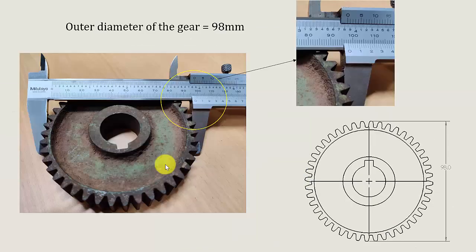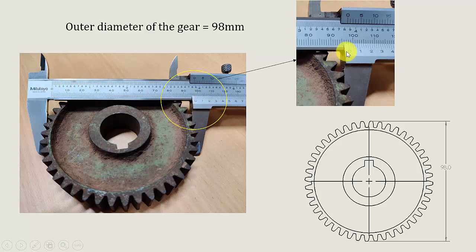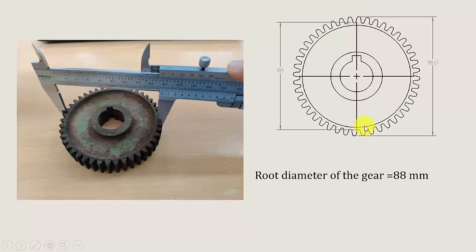First I am going to measure the dimensions of the given spur gear using vernier caliper. I have measured the outer diameter — the outer diameter of the gear is 98 mm. I have marked the dimension in a rough drawing. Then I have measured the root diameter and the root diameter is 88 mm, and I have marked it in the rough drawing.